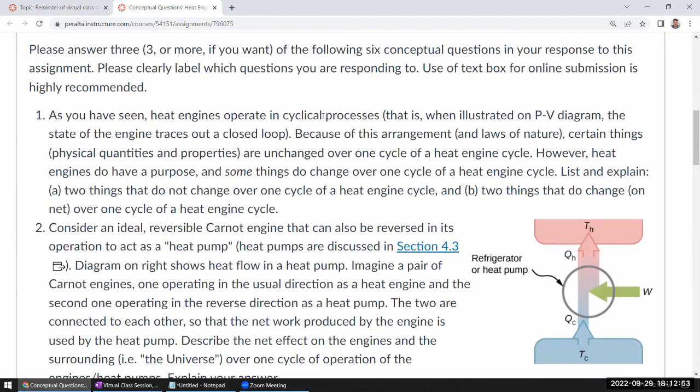As you have seen, heat engines operate in cyclical processes. Certain things are unchanged over one cycle, like the state functions. However, heat engines do have a purpose and some things do change. List and explain two things that do not change over one cycle. It's basically looking for what are the state functions. Temperature would be one, pressure would be another. Entropy could be another. Internal energy is another. Basically anything that's referring to state of the engine wouldn't change over a cycle. That's what being a state function is about.